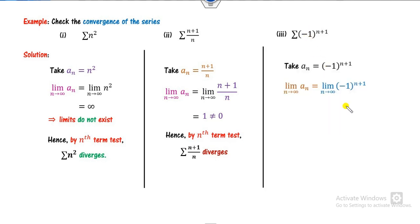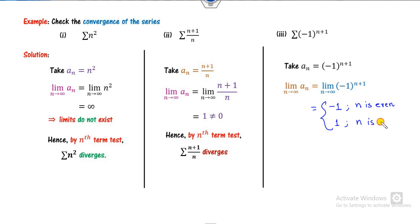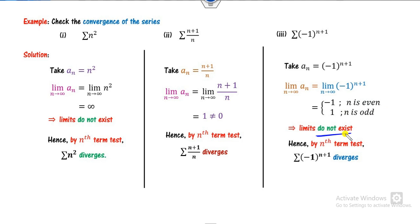For the third case, the limit of (-1)^(n+1) is either minus 1 or plus 1 depending on whether n is even or odd. If n is even, then n+1 is odd, giving minus 1; otherwise plus 1. Clearly the limit is not unique, so the limit does not exist. Hence, by the nth term test, this is again divergent.